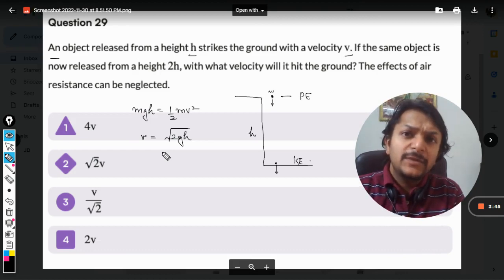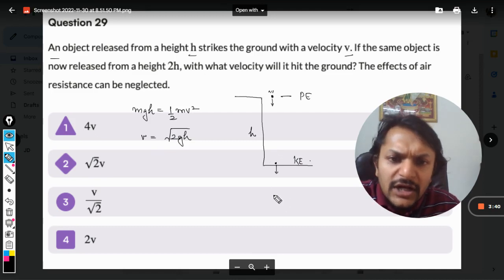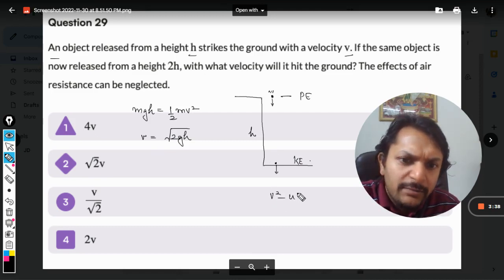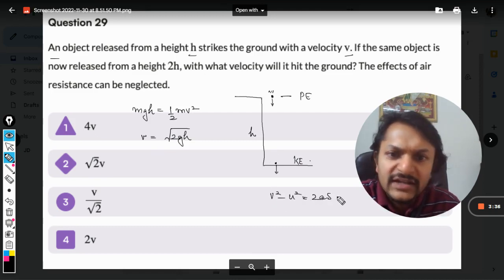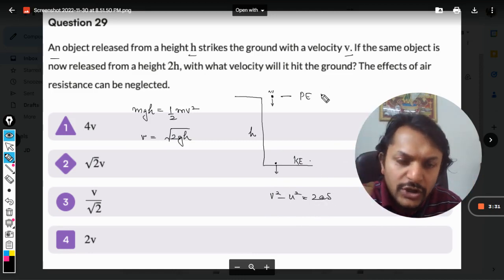For example, if I say v² - u² = 2as, I can find the velocity from this also. Let me show you. Let's say that u here is zero because it has only potential energy and kinetic energy is zero there.